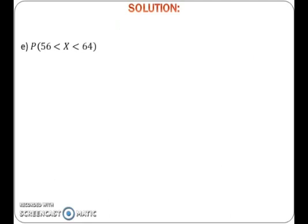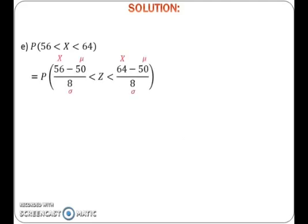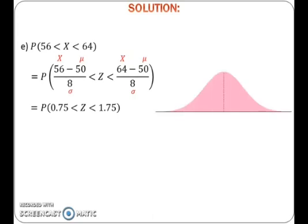To find probability of x between 56 and 64, first change normal distribution to standard normal distribution by using formula x minus mu over sigma. Here we get probability of x between 56 and 64 equals to probability of z between 0.75 and 1.75. After that, draw a bell-shaped graph with zero at the center. Plot 0.75 and 1.75 on the graph, draw two vertical lines and shade the region of probability that we want to find. Because we want to find probability of z between 0.75 and 1.75, the region would be in between 0.75 and 1.75.